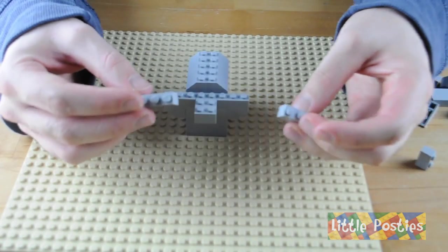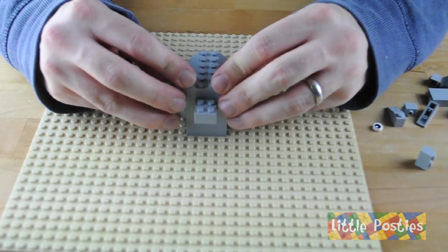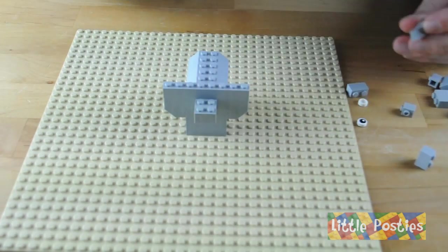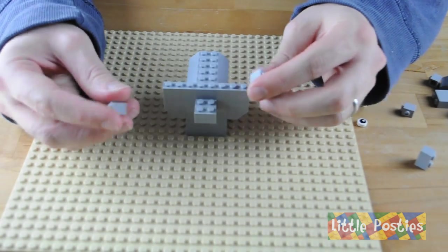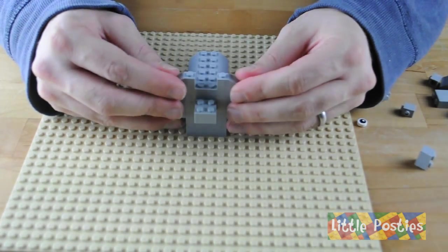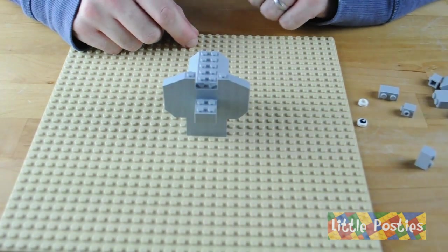You've then got your 1x4's to then lock those in. Then you've got the 1x3 33 degree slopes that rounds off the top of the ears. You can see it's starting to look like an elephant now.